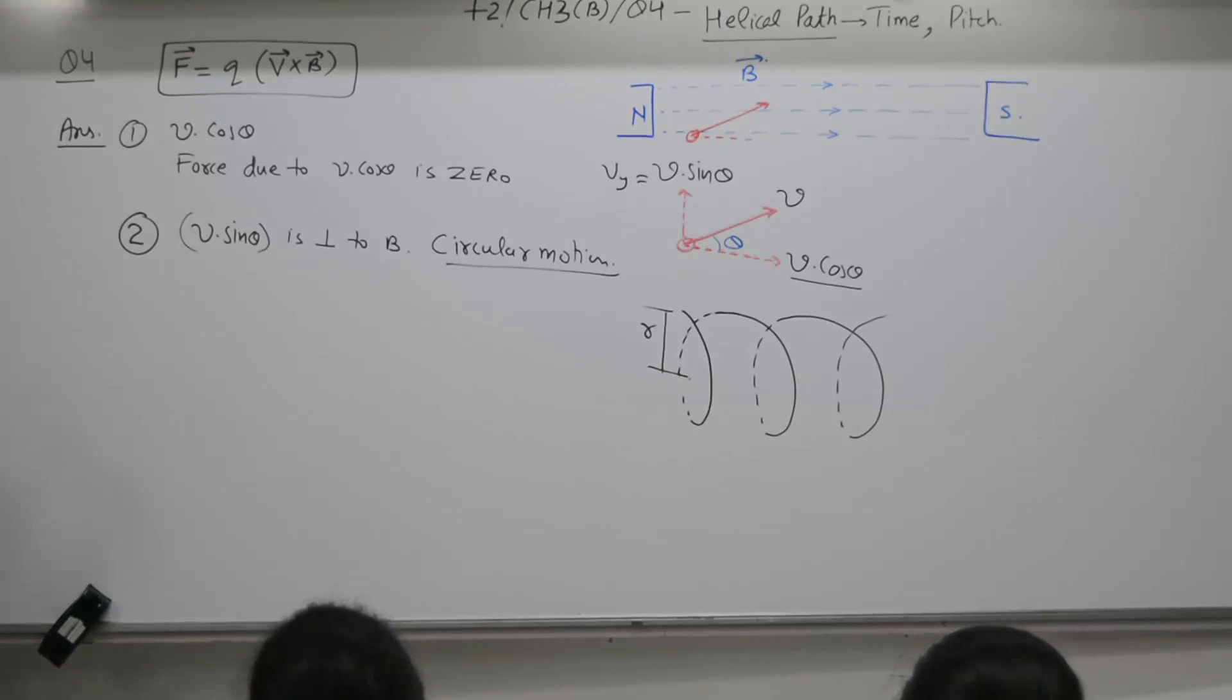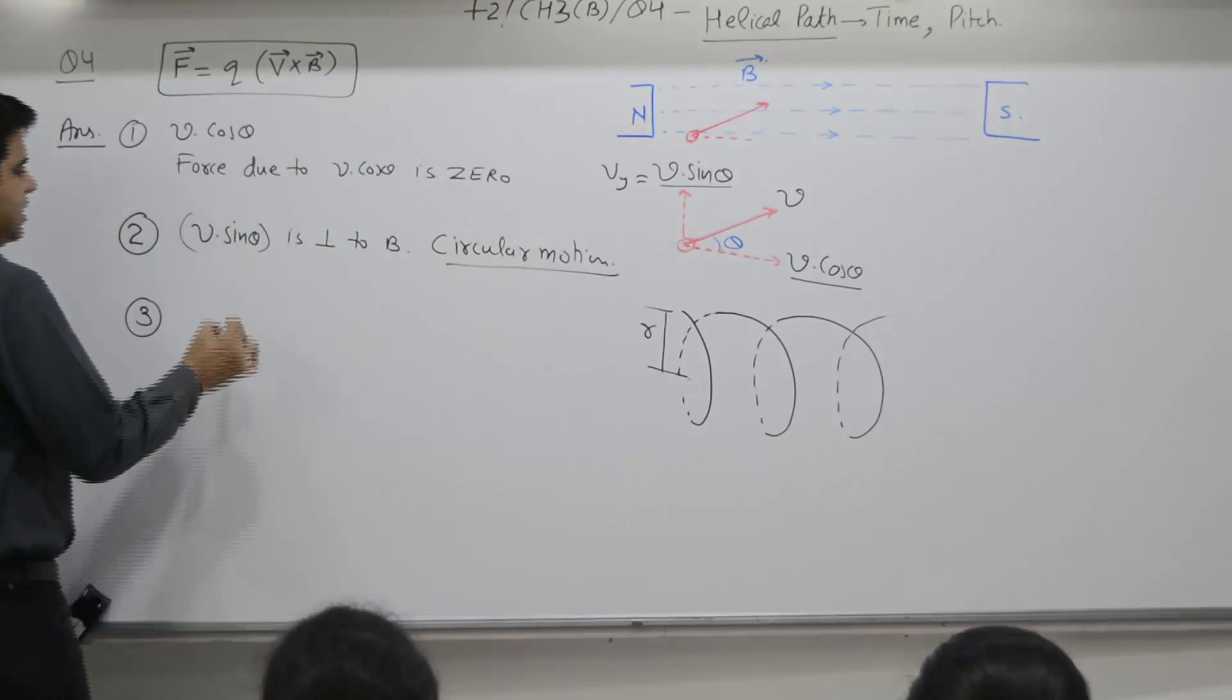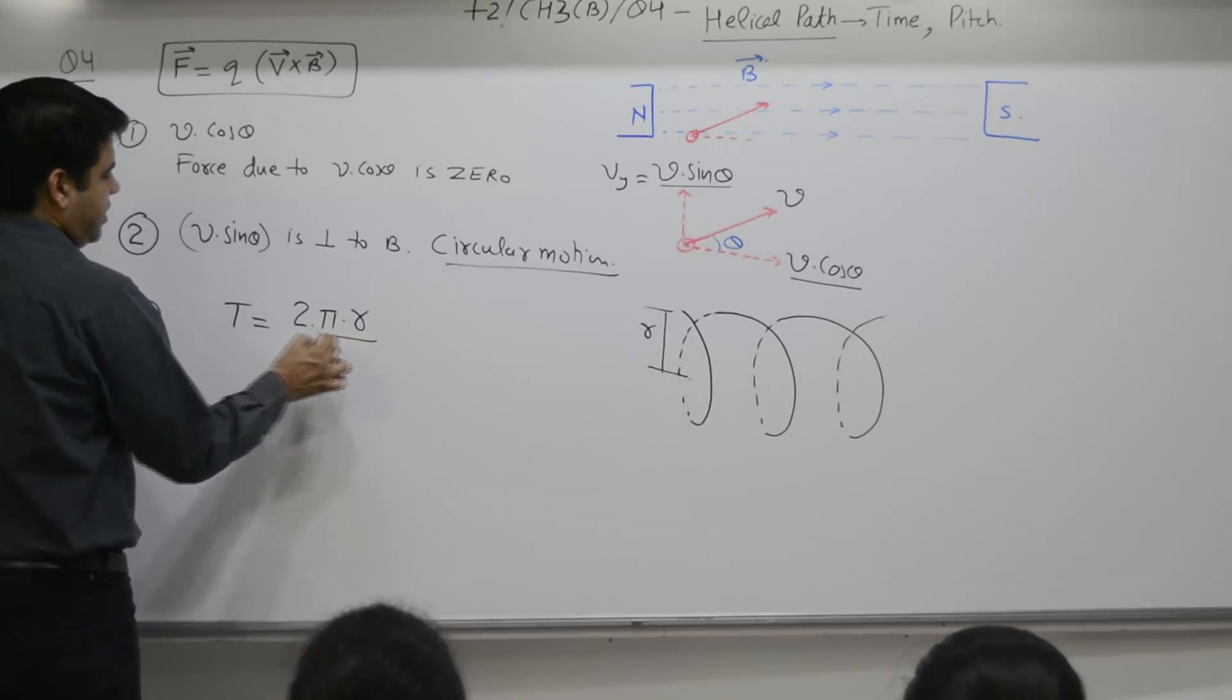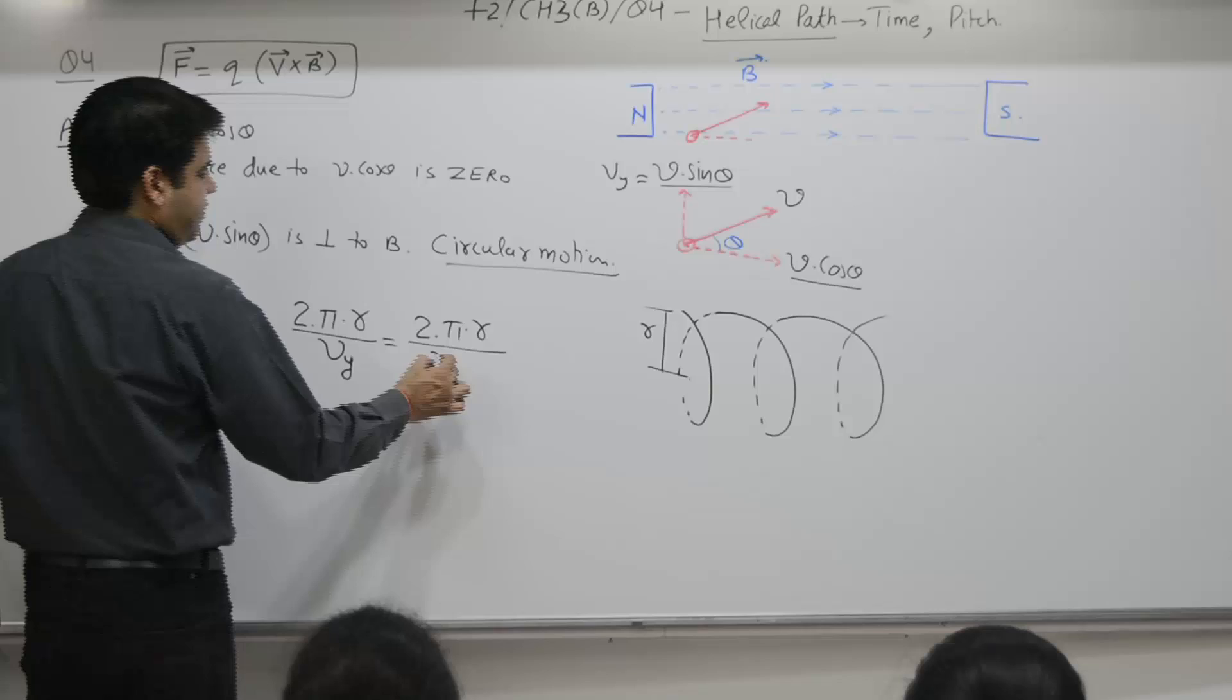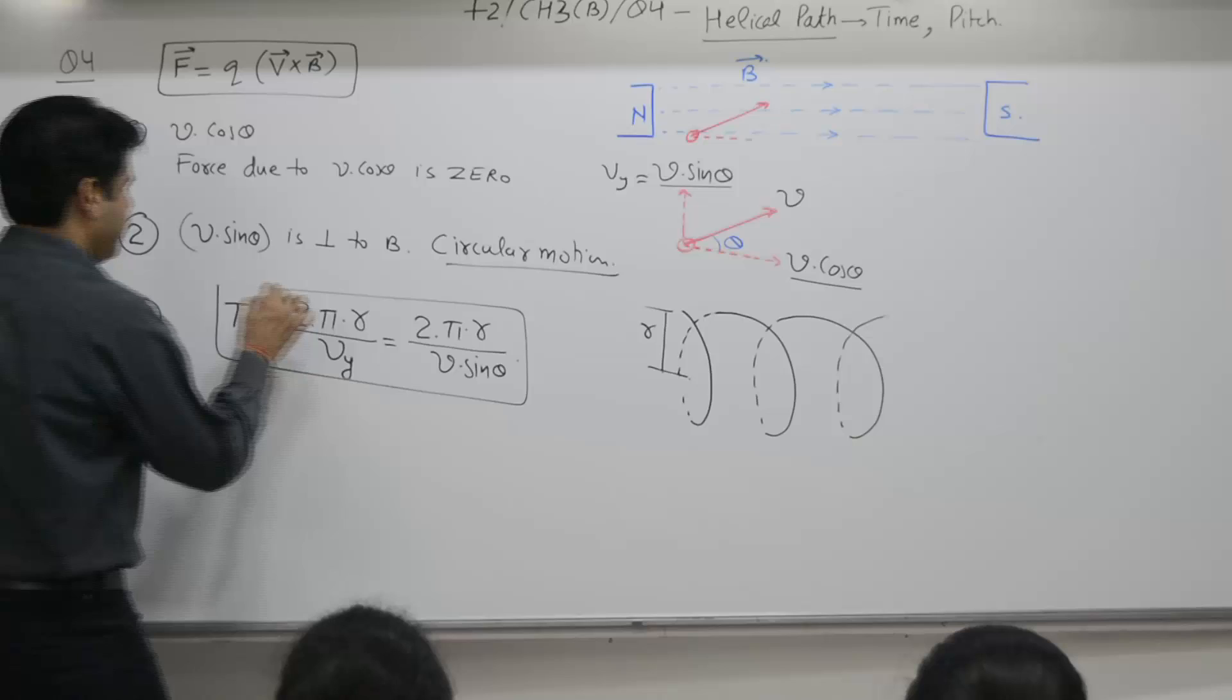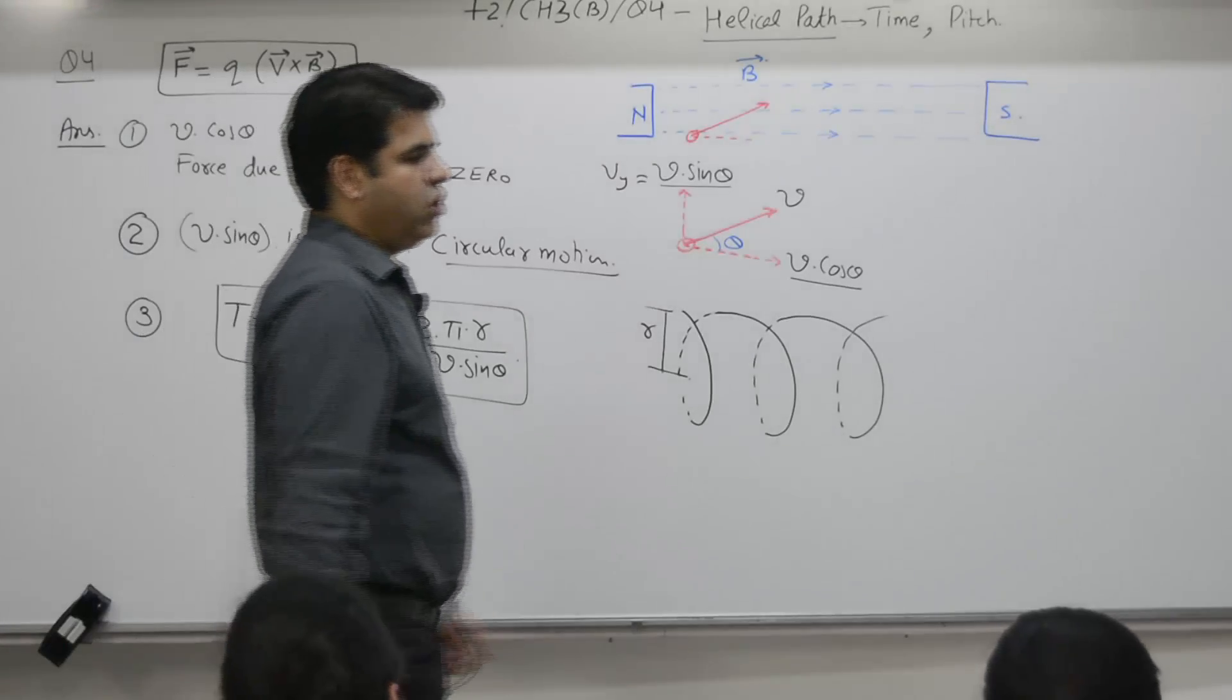3. In case you want to find out the time period for circular motion, only circular motion, that means, you will take into account only v sin theta. Time period is equal to what? 2 pi r, distance covered, divided by speed v y, is equal to what? 2 pi r over v sin theta. Time period. Draw a diagram, one full page, draw a diagram.